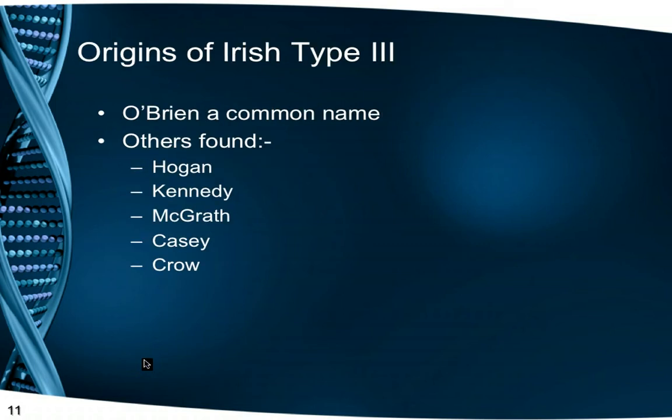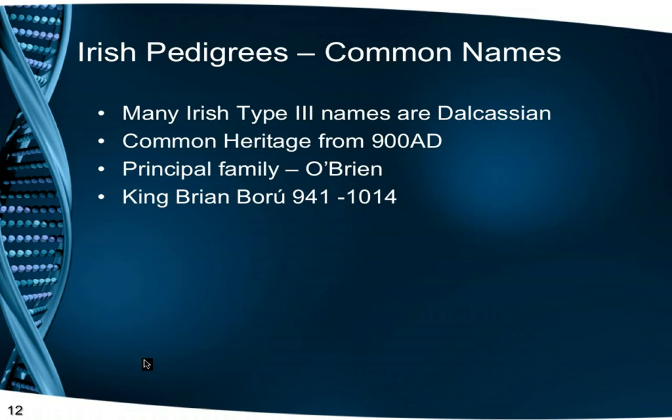As more and more results came in, studying the surnames, we found that the most common names were O'Brien and variants such as Brian and Bryant, together with Hogan, Kennedy, McGrath, Casey, and Crowe. When I studied the ancient Irish pedigrees, I came to realise that the majority of these surnames were Dalcassian and had a common heritage from around the year 900 AD. The principal Dalcassian family are the O'Briens, the descendants of the legendary King Brian Boru.